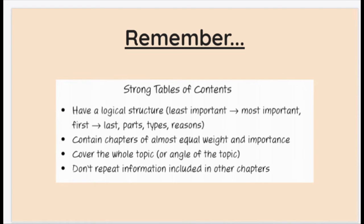A few things to remember from our previous work. A strong table of contents must have a logical structure — it might go from least important to most important, first to last, parts, types, or reasons. There's no right or wrong answer, but you should be able to explain why you put them in the order you did. Chapters should contain almost equal weight and importance — you don't want one chapter that's only one or two sentences while another is ten pages long. It should cover the whole topic, and you don't want to repeat information included in other chapters. With my penguins, if I have a chapter about what their bodies look like, I'll include information about their feet there — I'm not going to have a whole separate chapter about their feet again.